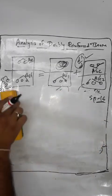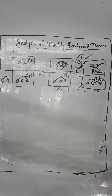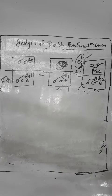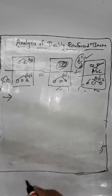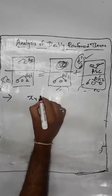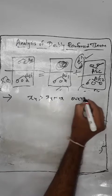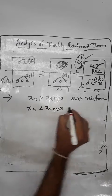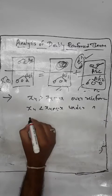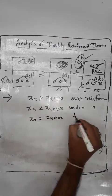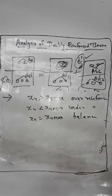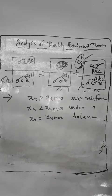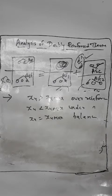After finding FSC, we get the actual depth XU. We then classify the section as in singly reinforced beam analysis: if XU > XU,max → over-reinforced; if XU < XU,max → under-reinforced; if XU = XU,max → balanced section. After determining the section type, we calculate the moment of resistance by multiplying force by lever arm.